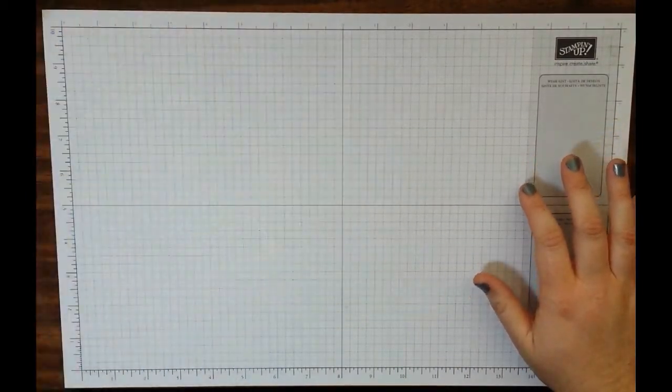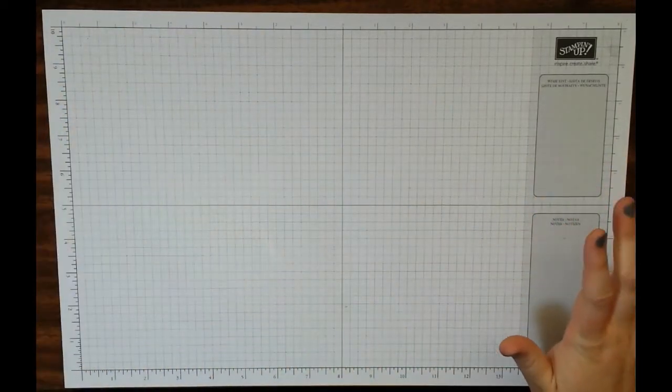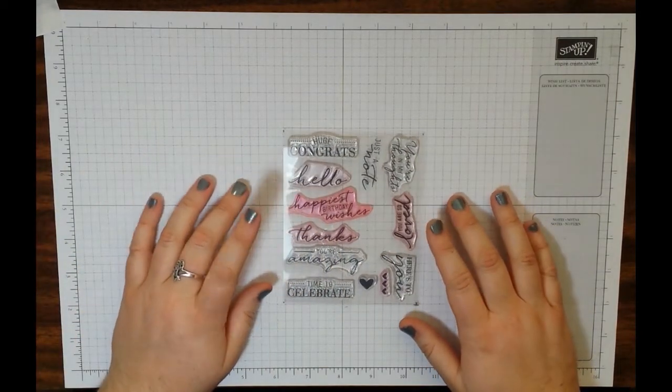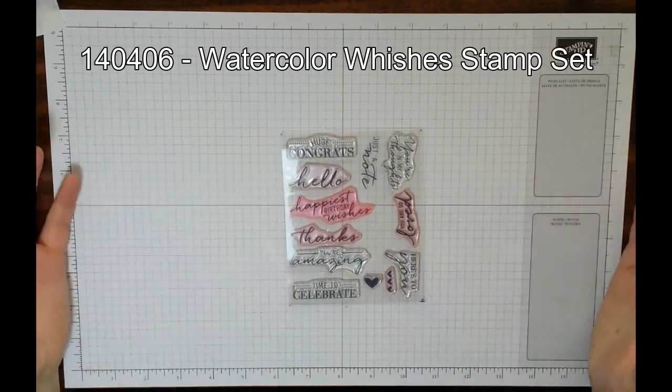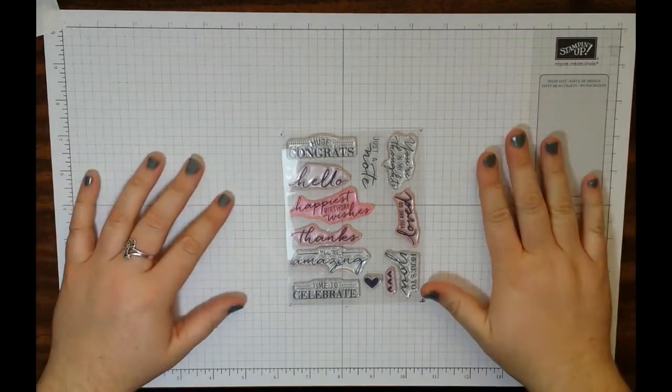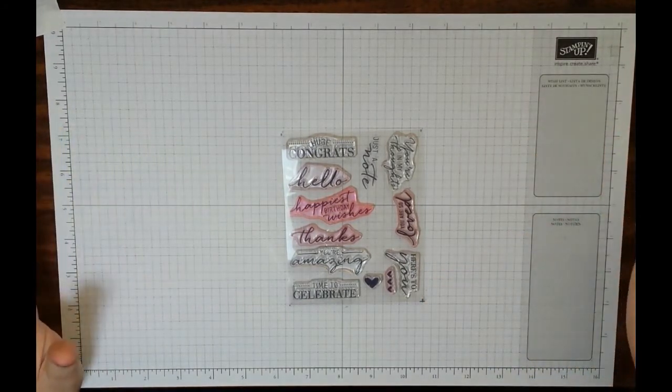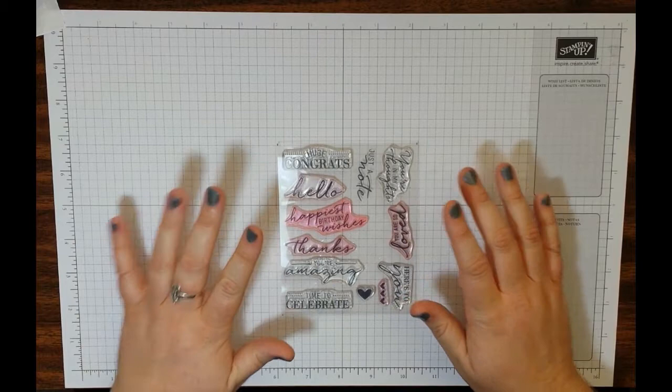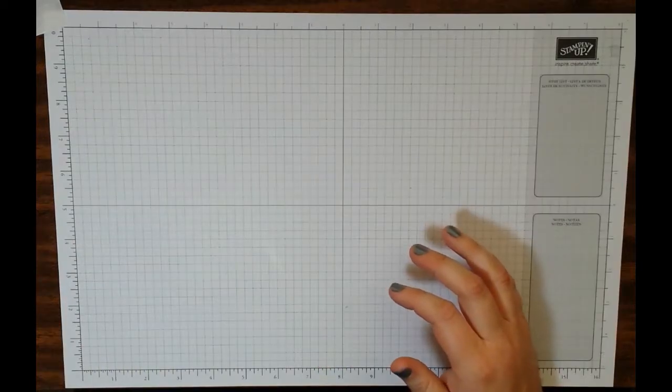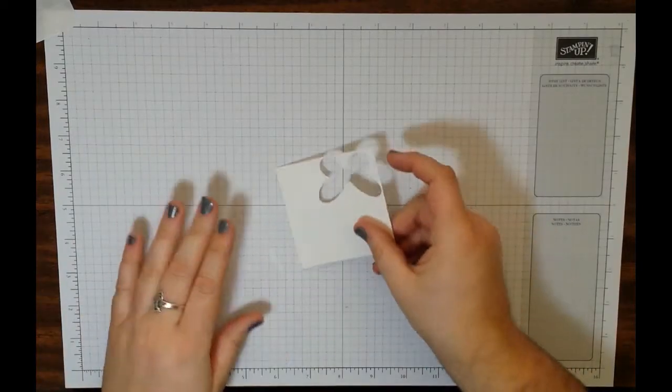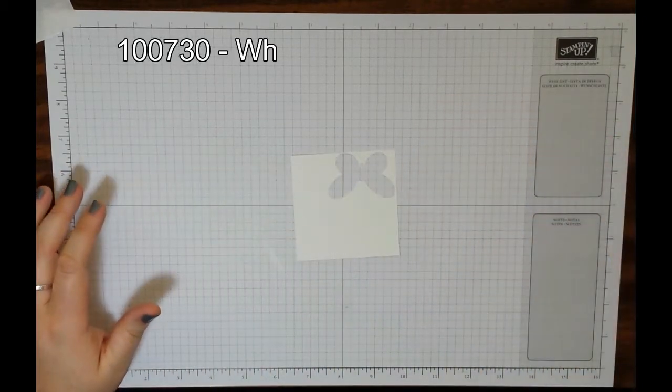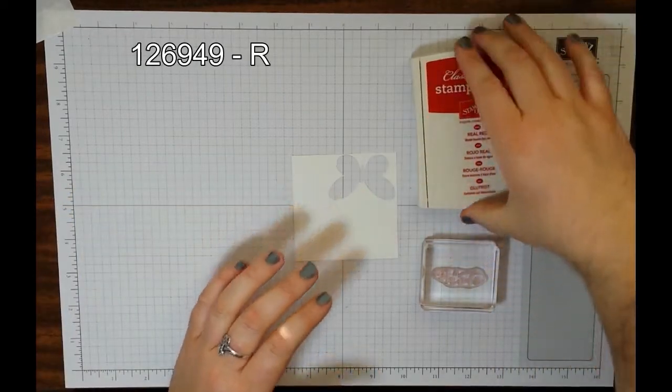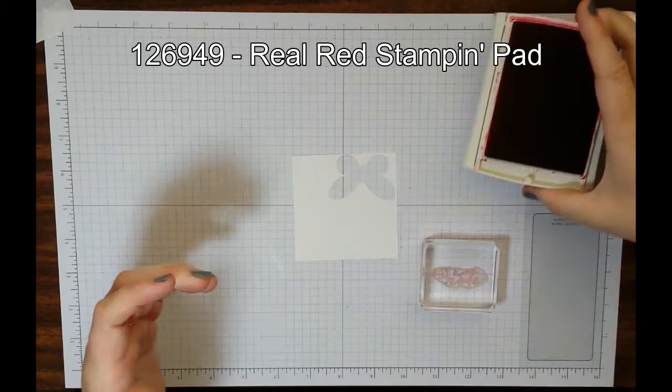I'm going to do all the stamping first and the Big Shot work first. The first thing we're going to do is grab our stamp set. I am using the Watercolor Wishes stamp set from the all-inclusive kit that we have in Stampin' Up's catalog. You are going to need a piece of Whisper White, large enough that your stamp fits. Today I'm using just a note. So grab your Whisper White, your Real Red ink, and we are going to stamp.